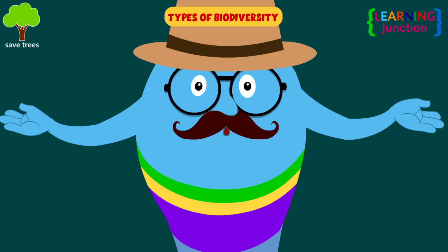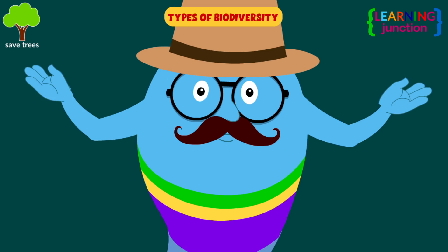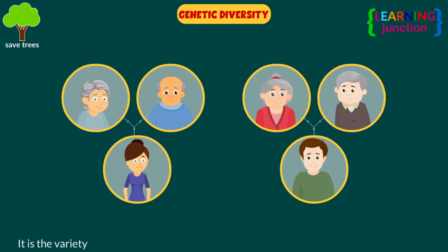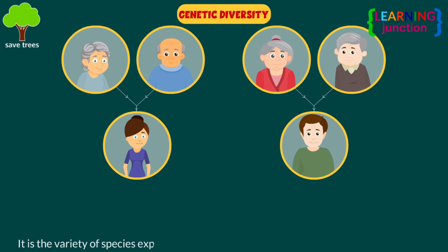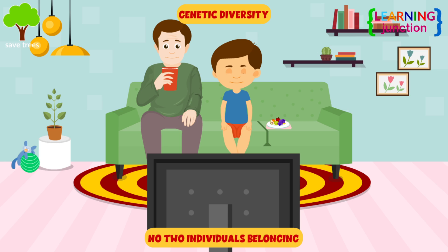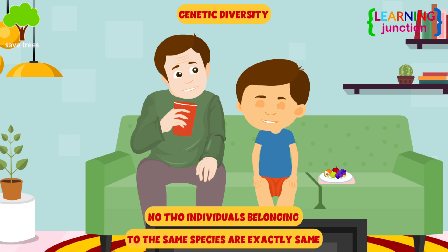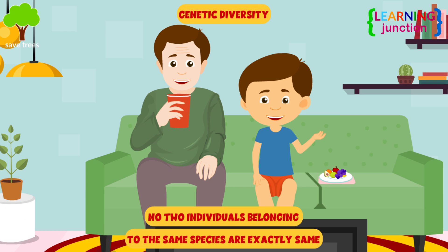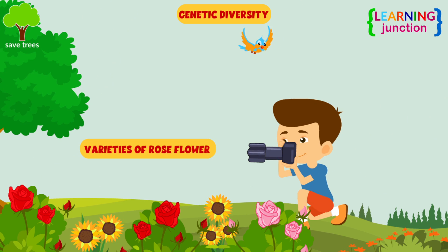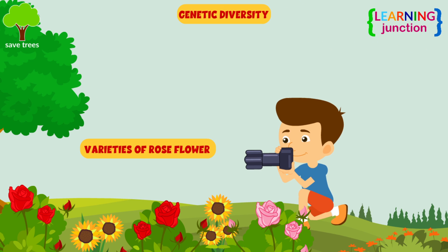Let me show you the types of biodiversity. Genetic diversity is the variety of species expressed at the genetic level by each individual in one species. No two individuals belonging to the same species are exactly the same. For example, there are different varieties of rose flowers.